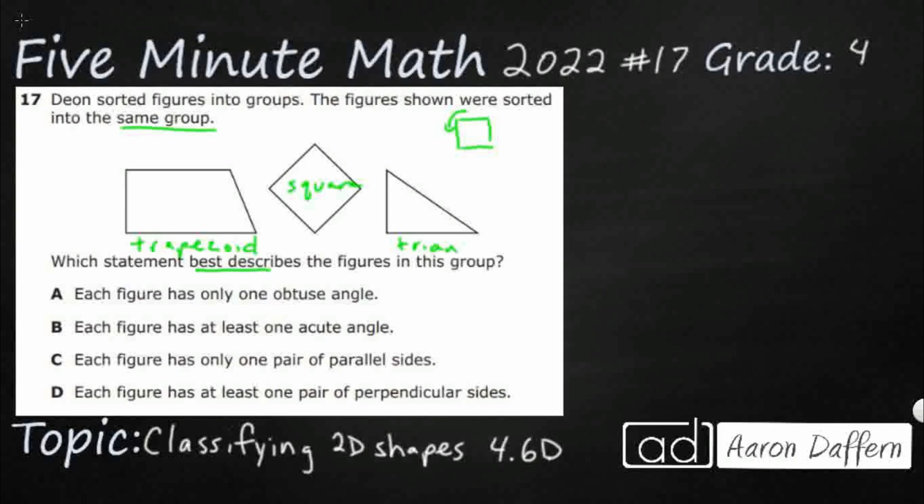Let's take a look. Each figure has only one obtuse angle. So we need to know about angles. Acute obtuse angles, those are not going to be on our mathematics chart.